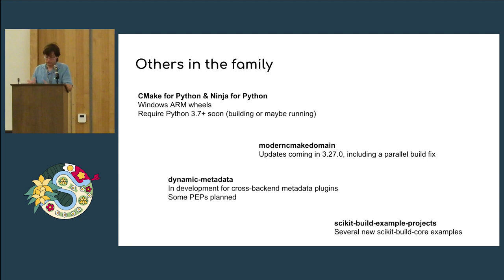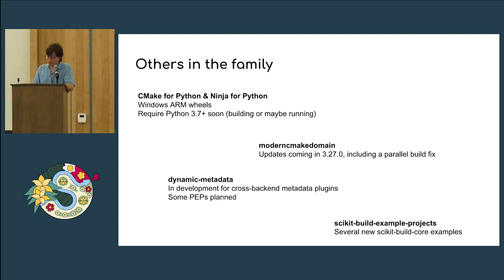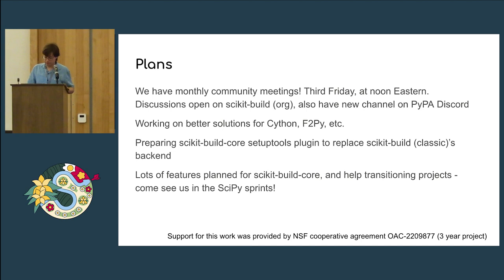There are other members of the Scikit-Build family. CMake now ships Windows ARM wheels, and fairly soon we're going to start requiring Python 3.7 for at least building them, as they're moving over to Scikit-Build Core. Also, GitHub is killing Python 2.7 for testing. We work on the Modern CMake domain, which comes out of CMake, with some nice updates coming in 3.27 — a tool that lets you document your CMake code in Sphinx. We're also working on dynamic metadata standardization, and there are some new examples and future plans.